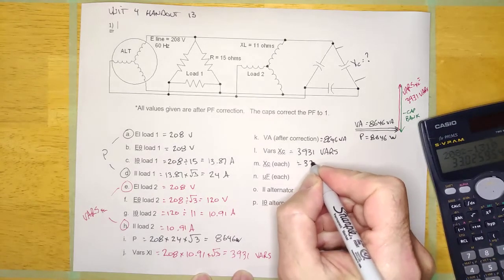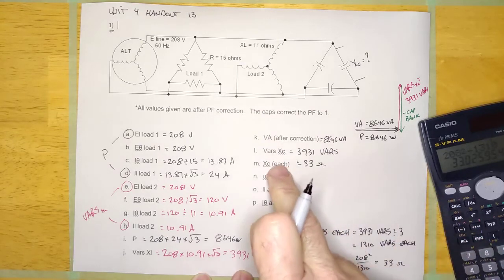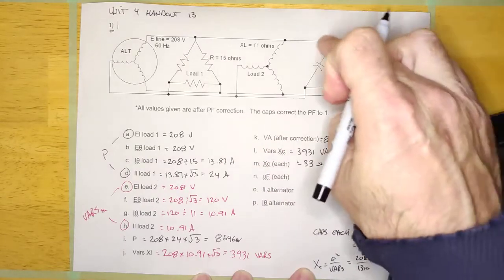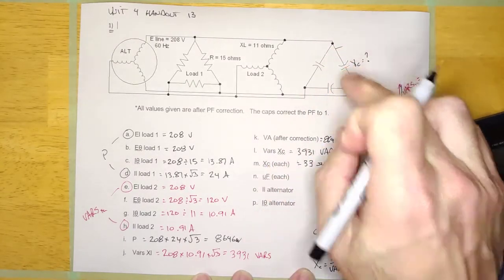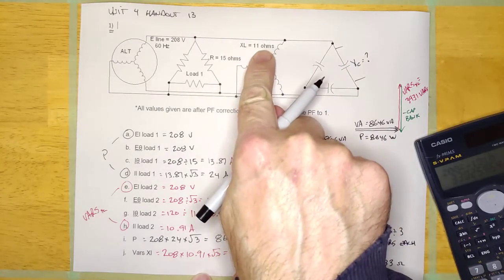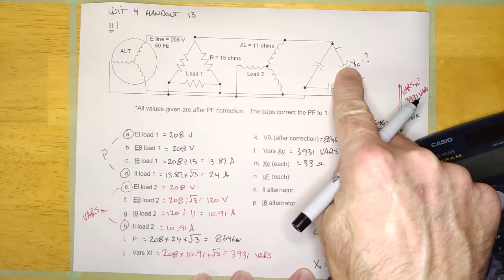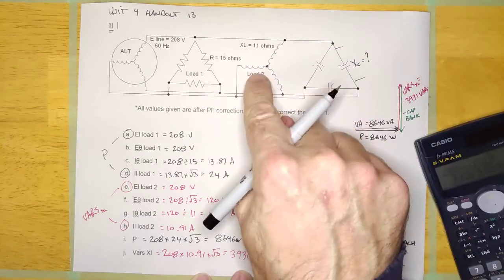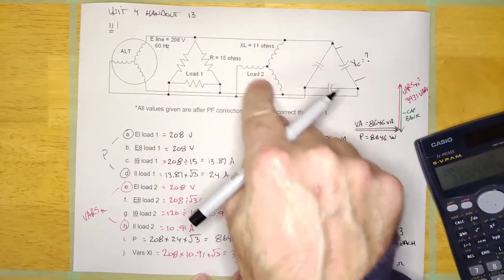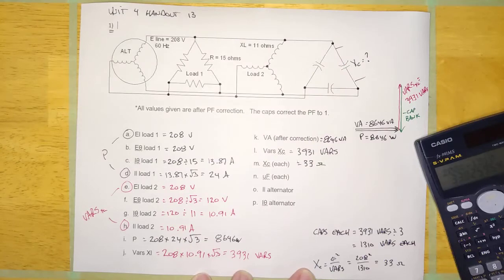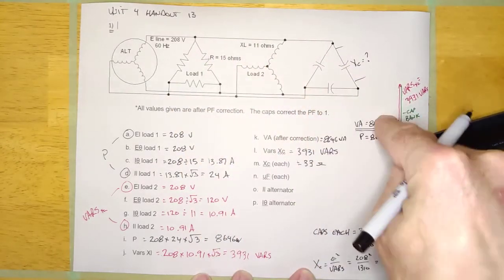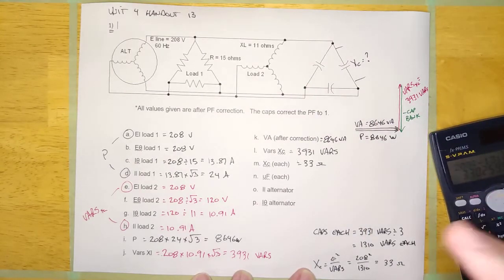208 squared divided by 1,310 equals 33 ohms. Be careful — even though the inductor is 11 ohms, the capacitor is not going to be 11 ohms, because this is not a series circuit. Also the capacitor bank is connected delta. The only proper way to solve this is with power phasors — don't take shortcuts, it won't work.